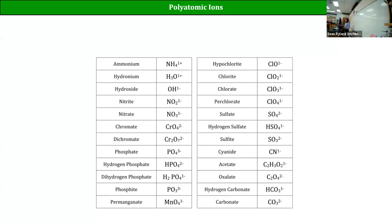At some point you stop considering something a polyatomic ion and start treating it like an organic molecule or even a protein. Most proteins are polyatomic ions, but they have formulas with a couple hundred carbons - you could easily get to C200 O100 N100 with a couple of sulfurs and other elements, all with a charge. That whole thing could be considered one large polyatomic ion, but a chemist would just call it by its protein name - pepsin, or whatever it is.